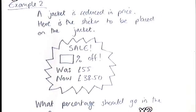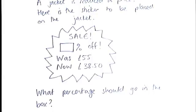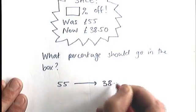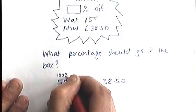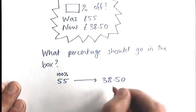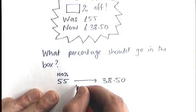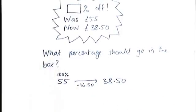Let's have a look at a second question now, a second example. And once again, we'll do it in two different ways. This one says, example two, a jacket is reduced in price. Here is the sticker to be placed on the jacket. It says sale. What percentage is going to be taken off? Was 55 pounds. Now 38.50. What percentage should go in the box there? So let's have a look at this problem. We have a jacket which was 55 pounds and it's now gone down to 38 pounds 50. So I call that one my 100%. And how much has it gone down by? Well, here you need to do a subtraction. You need to work out what the difference is between these two. 16 pounds 50 has been taken off in the sale.